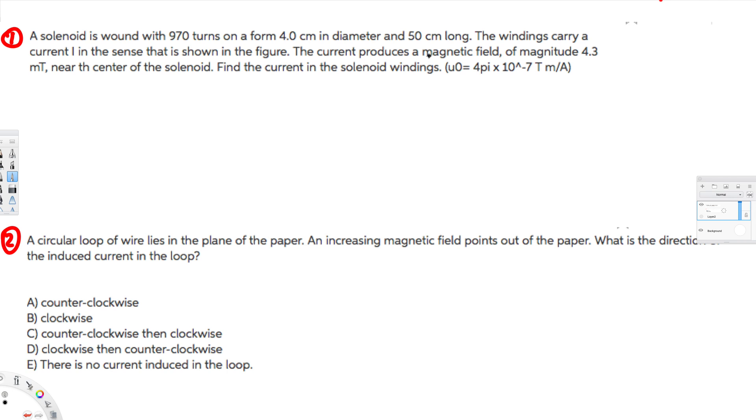The current produces a magnetic field of magnitude 4.3 millitesla near the center of the solenoid. Find the current in the solenoid windings. Let's see how we can find it. First of all, to find the current...